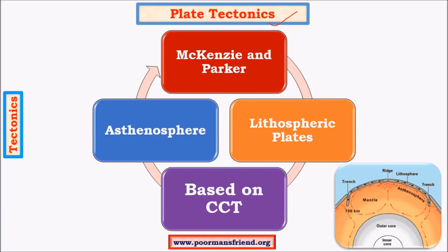According to this theory, Earth's crust is divided into various plates called lithospheric plates. Usually the thickness of the lithosphere is about 100 kilometers on continents, whereas the oceanic lithosphere is about 30 to 50 kilometers in thickness. The forces required for the movement of plates — what we call plate tectonics — are mainly due to convection currents.